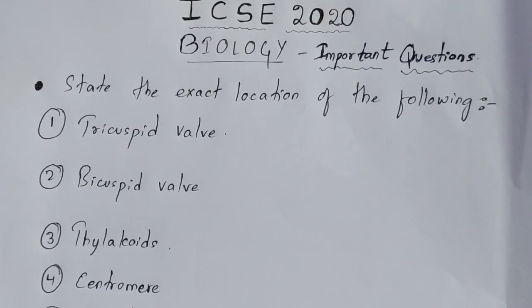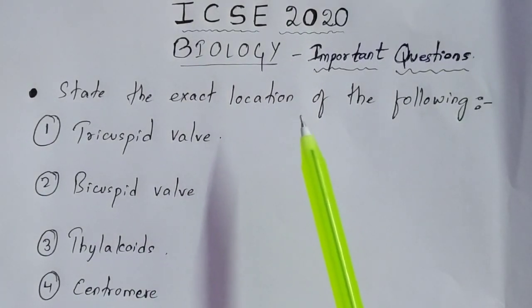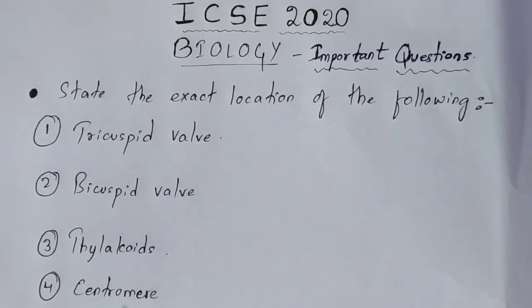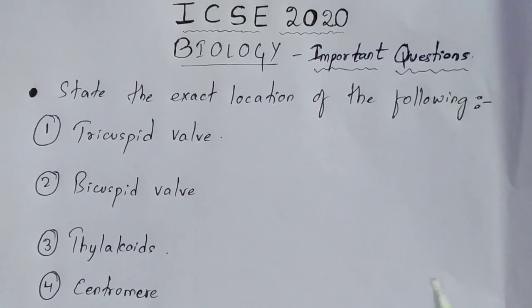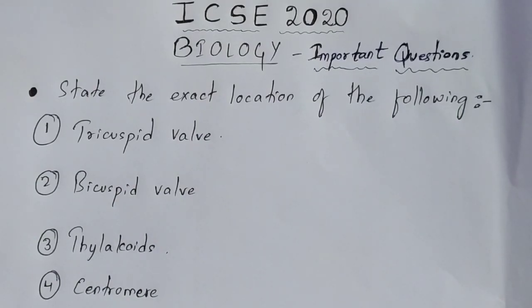Hi guys, this is Barsha and you are watching Mastermind. In this session we are going to discuss important questions from Biology which are important for your ICC 2020 board examination. These are basically short questions where you have to give the exact location of the following. They are asked for 5 to 6 marks in your board examination, generally in Section A, and can also be asked in Section B. There are basically 8 questions, so let us begin.